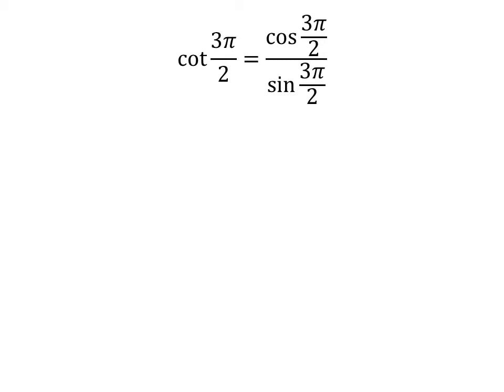As we know, cotangent of θ equals cosine of θ divided by sine of θ. So, cotangent of 3π/2 equals cosine of 3π/2 divided by sine of 3π/2.